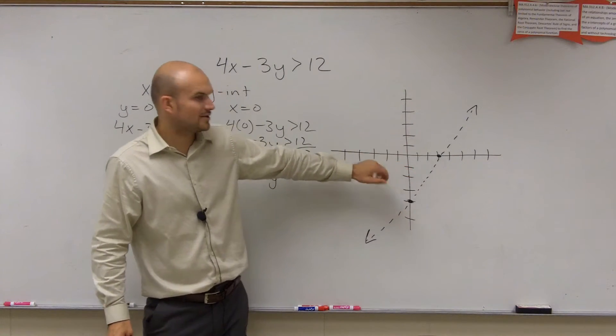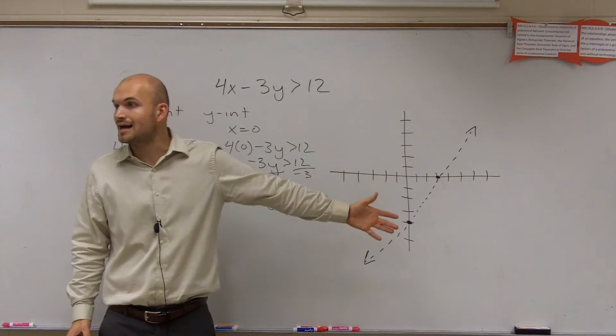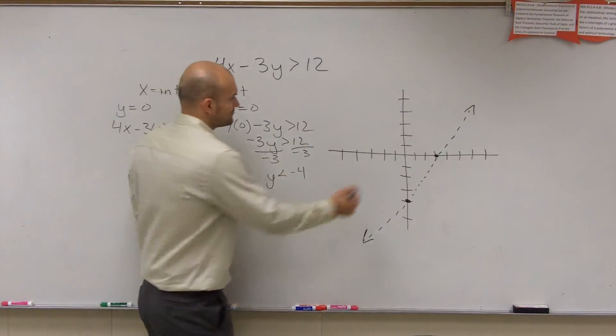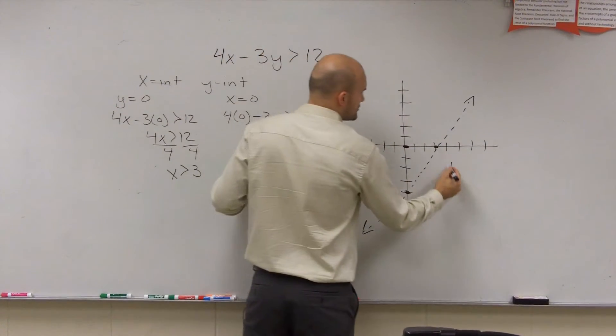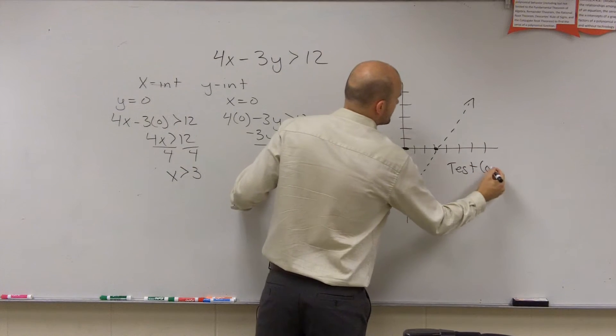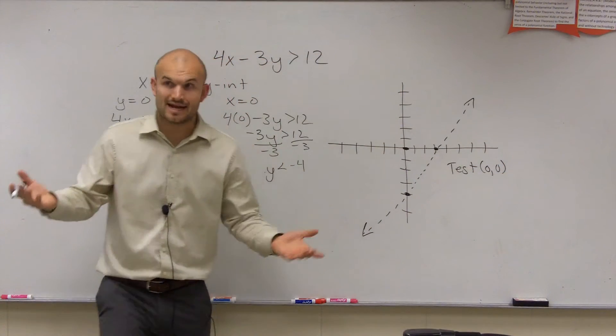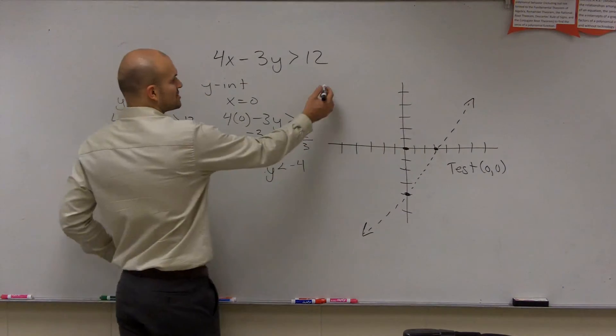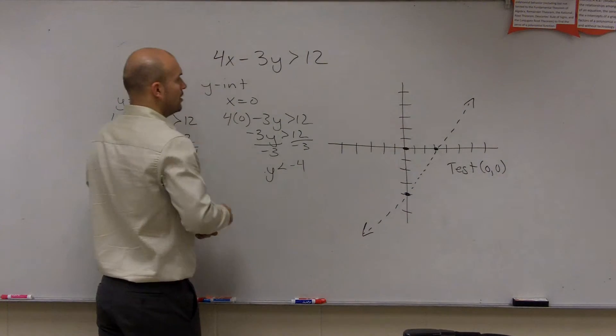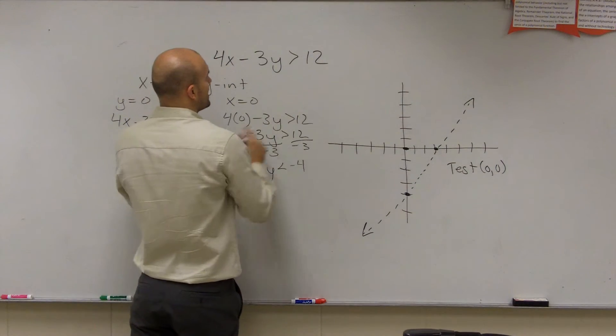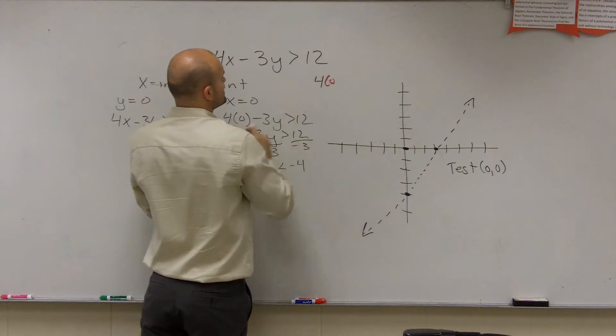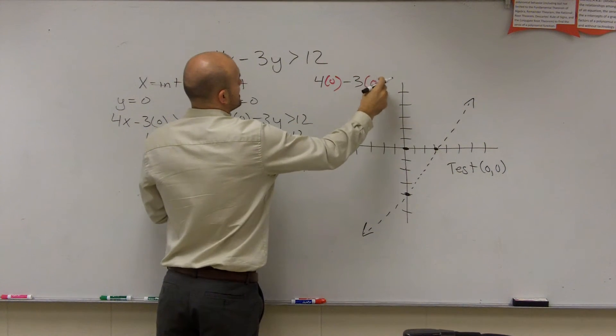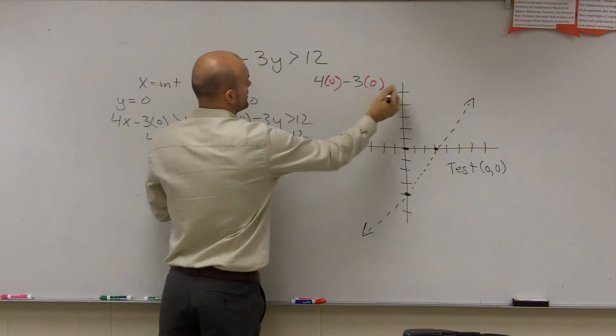So now, for this one, we need to choose a test point. Remember, we don't want to choose a test point on the line because that tells us if it's solid or dashed. We want to know where do we shade. We always like to choose the test point 0, 0. Unless my line goes through 0, 0, then again, I would be testing if it's shaded or dashed again. So I test 0, 0, and all I need to do is just plug in 0 or plug those points in for my function. So I do 4 times 0 minus 3 times 0 is greater than 12.